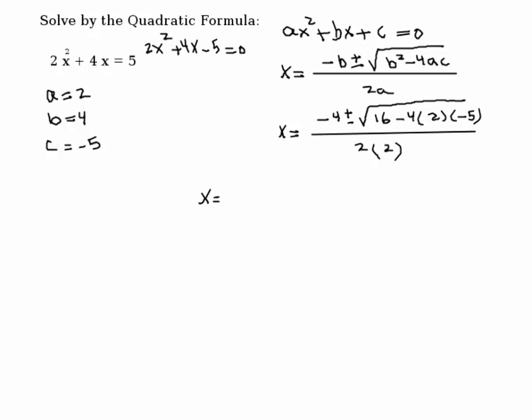So what do we have under the radical? x equals minus 4, plus and minus, at the bottom we get 4, here we have 16 minus what? Or plus what? Plus, because we have a negative times a negative would be positive. 2 times 4 is 8, times 5 is 40, very good.